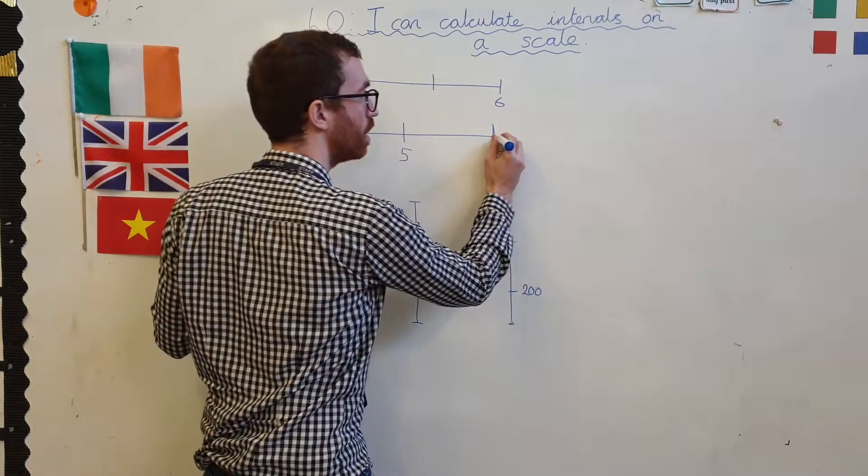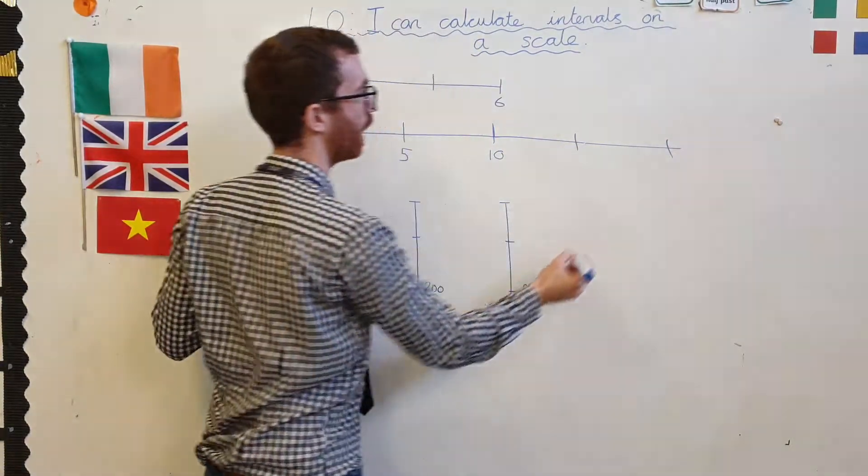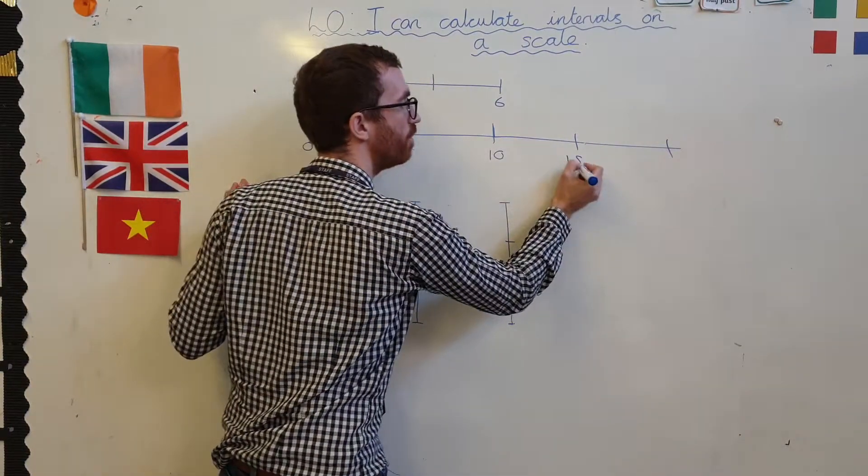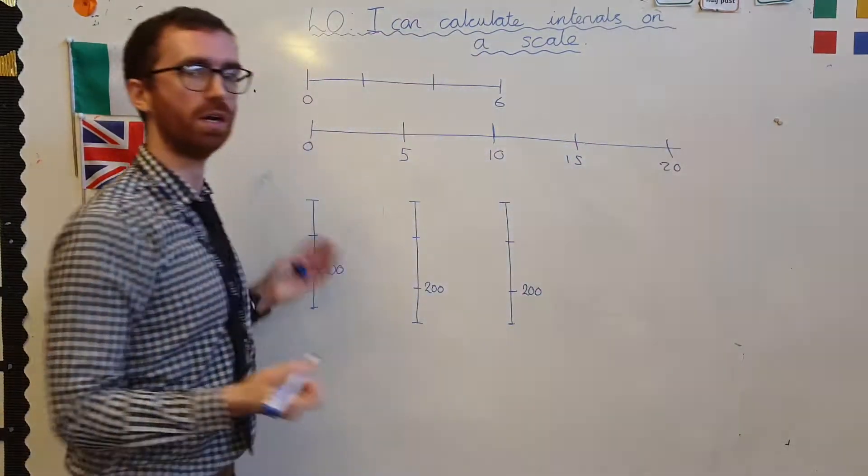Actually, if I carried this scale on further, I would probably work out that each point on this scale was going to be 5. So we've got 5, 10, 15, 20, and so on. Okay, nice.